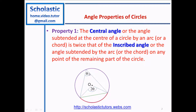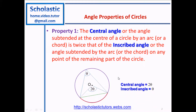The inscribed angle is the angle subtended in the remaining part of the circle — the arc is here and the remaining part is shown in purple. The angle subtended in the remaining part of the circle equals θ. So if the central angle is 2θ, the inscribed angle is half of that, which is θ.